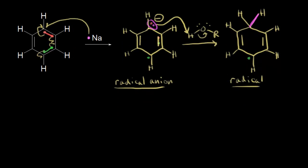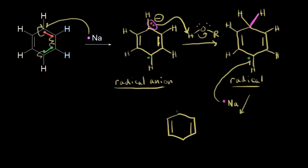In the third step, more sodium comes along. Once again, sodium has one valence electron, and it donates that electron to the ring — specifically to the carbon that already had the green radical electron. That carbon now has both a green and a magenta electron, giving it a negative one formal charge, so we form a new carbanion.